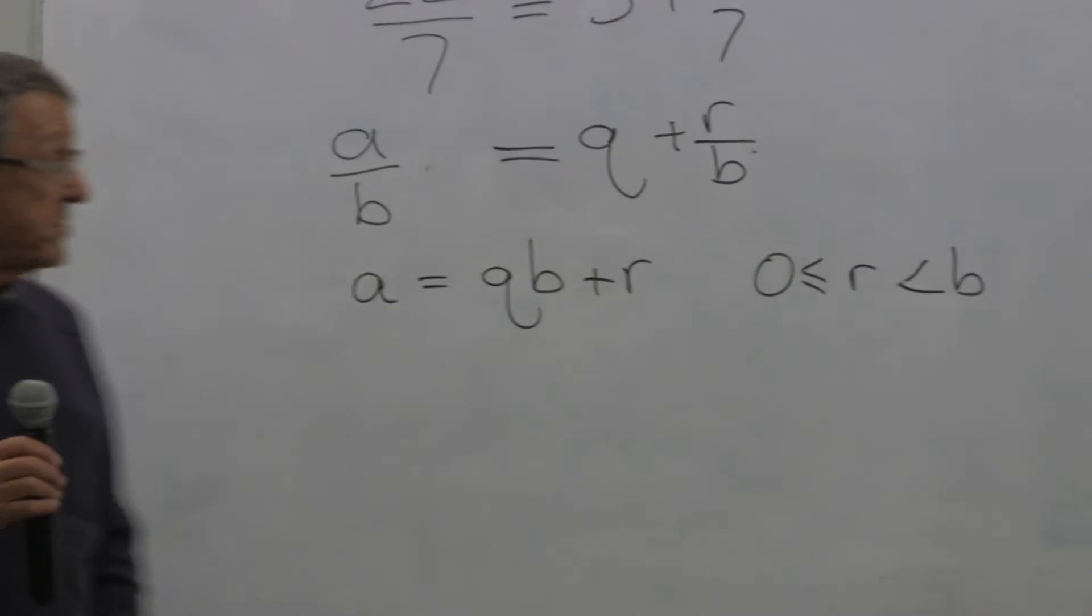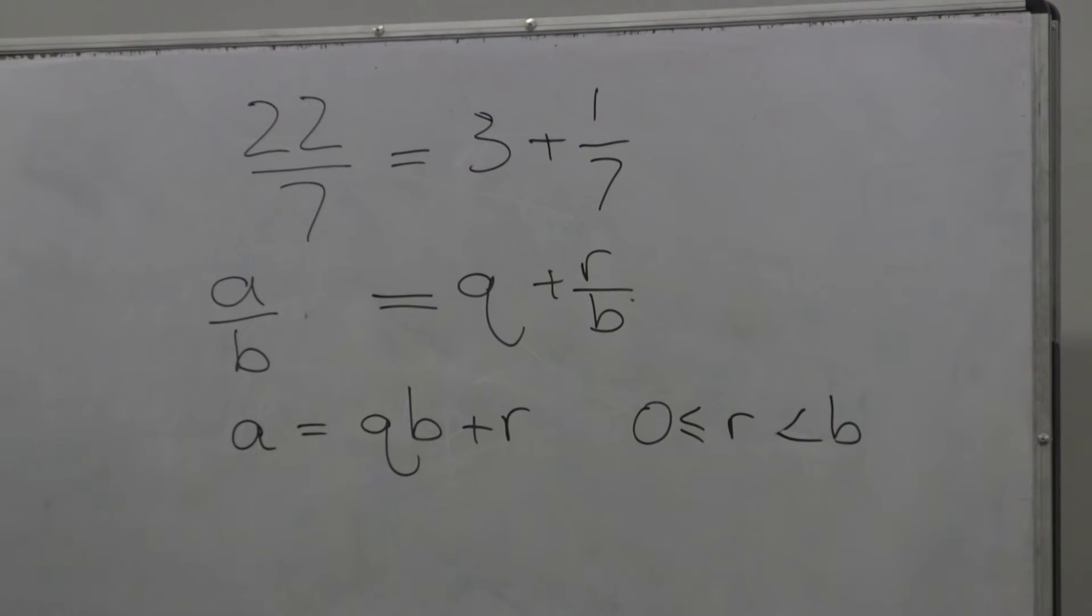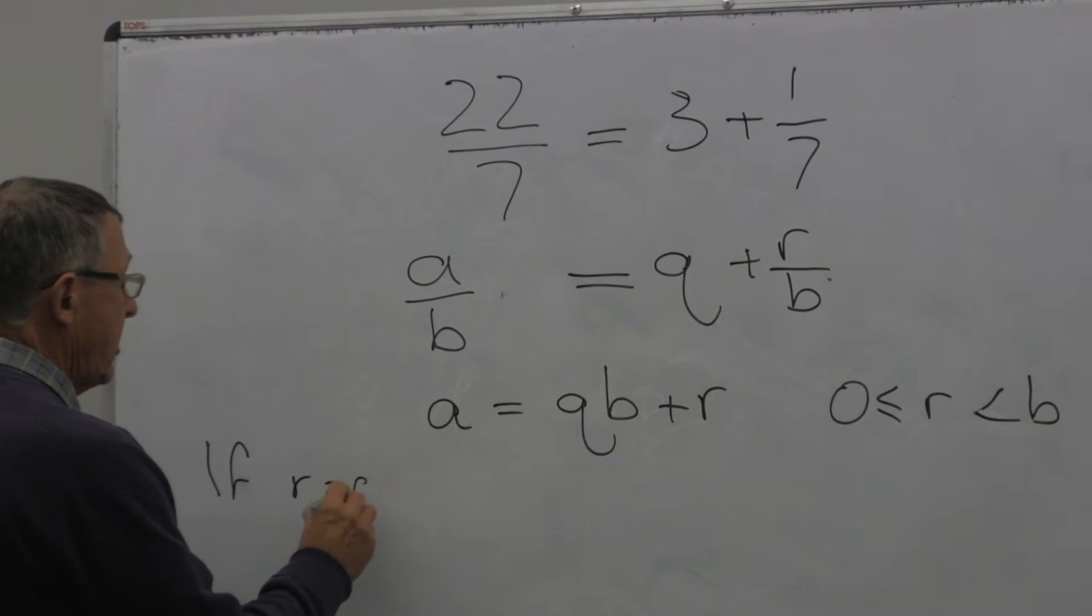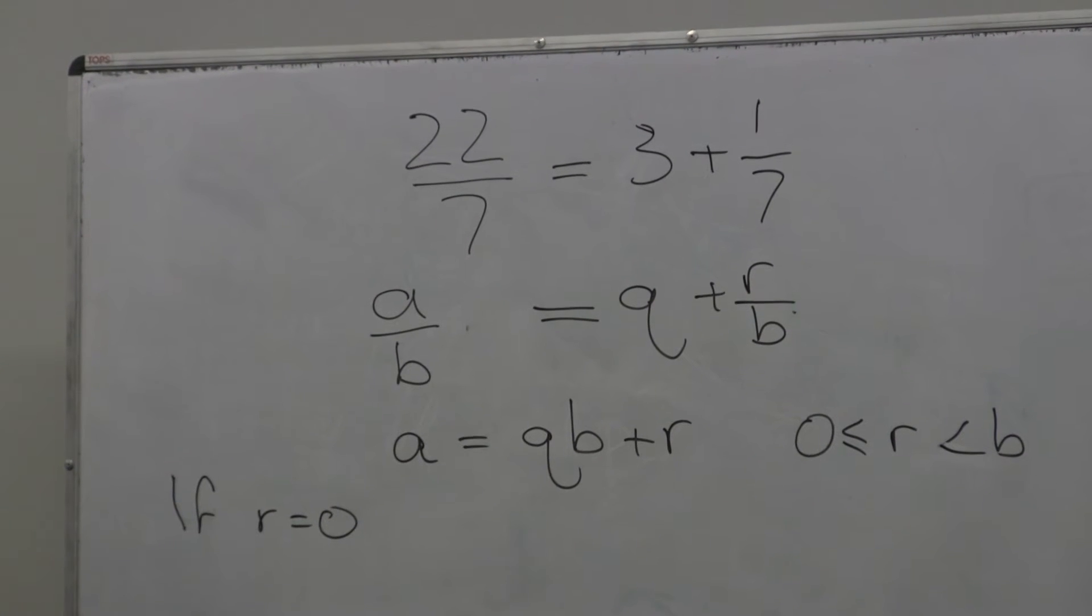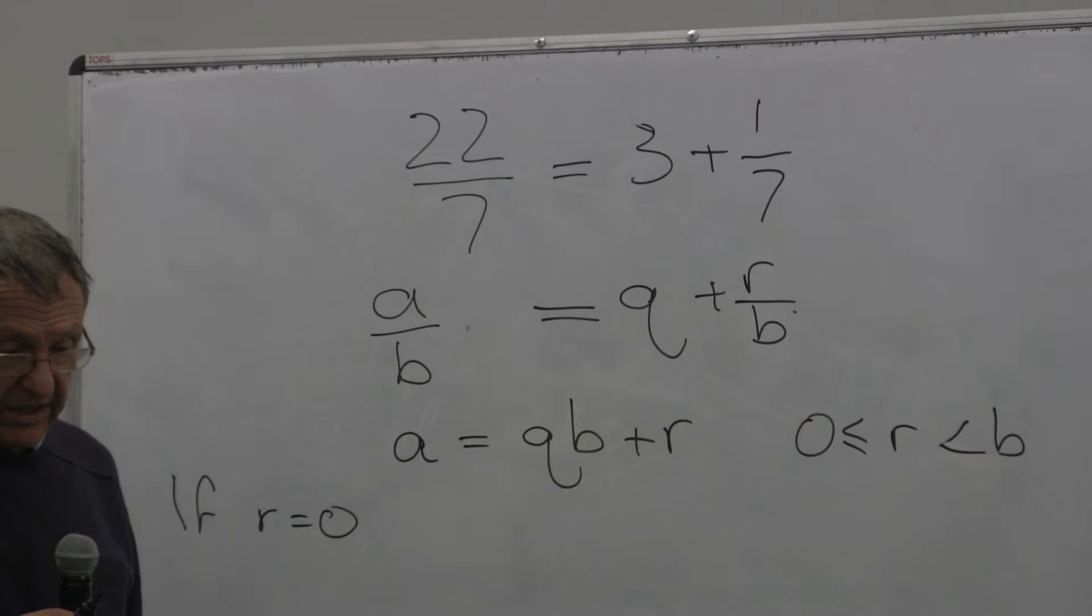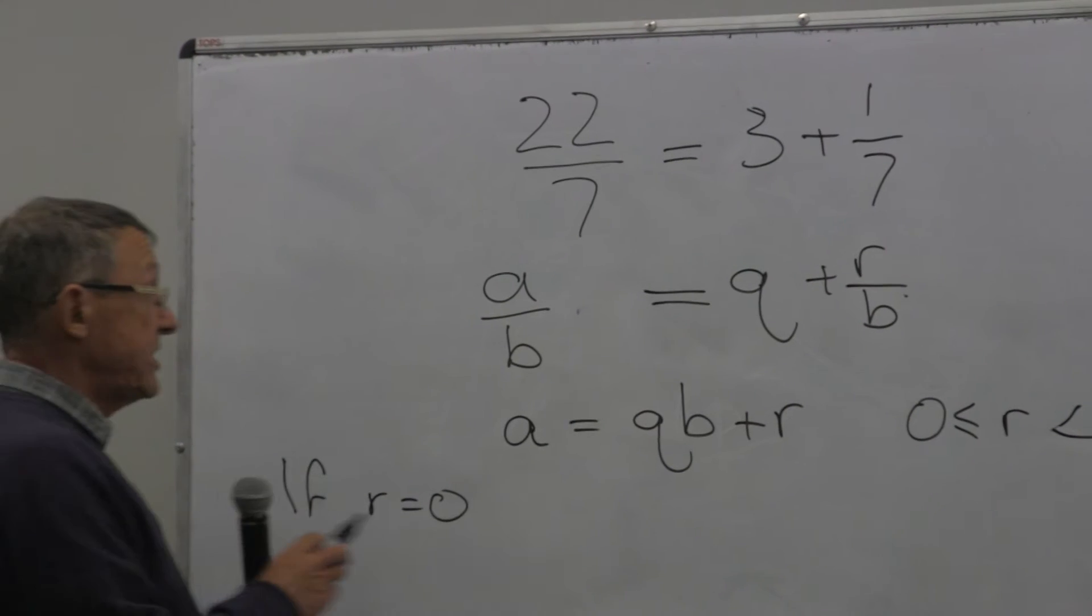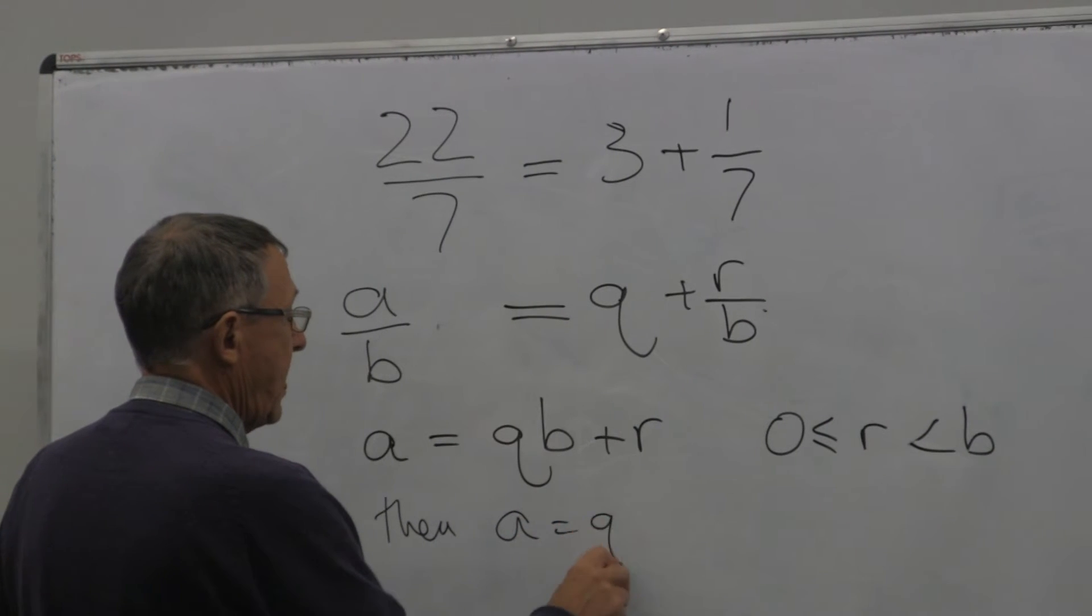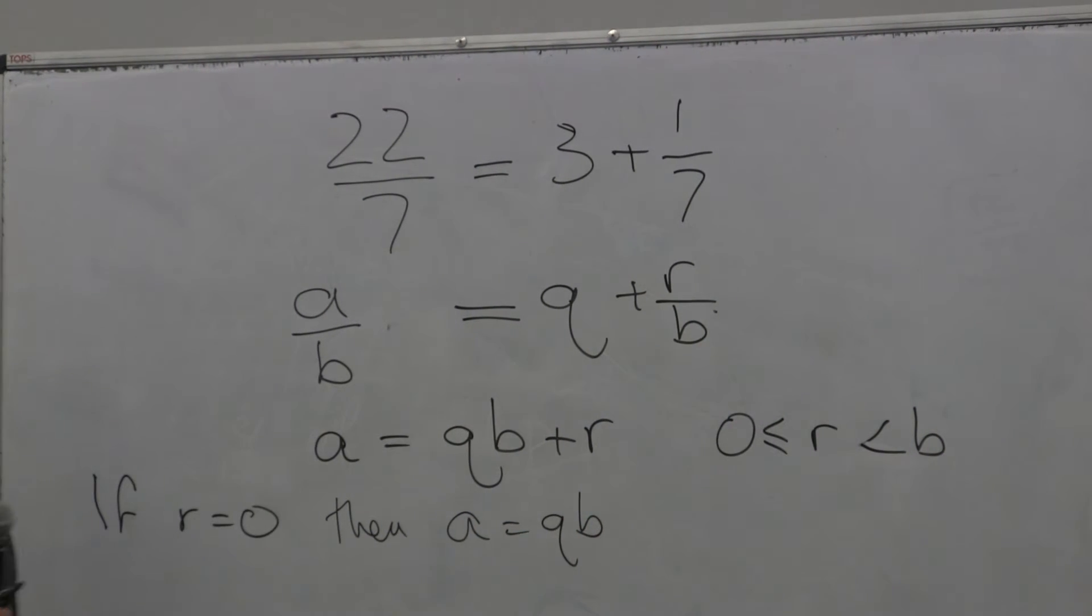And so this is called the Euclidean property of the integers. And perhaps the most interesting situation is if R equals naught. If the remainder is zero, then we say many things.